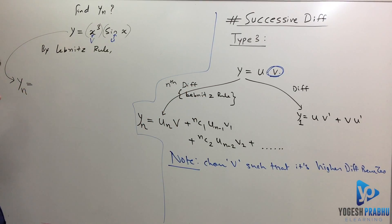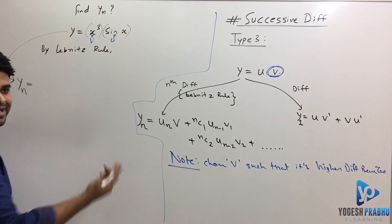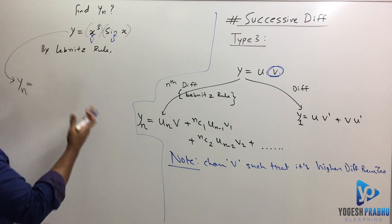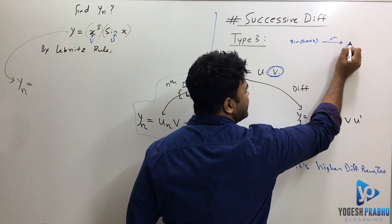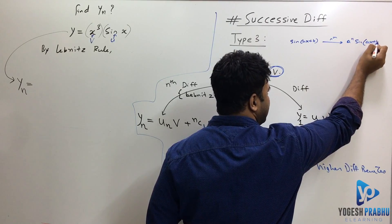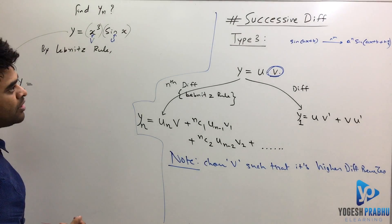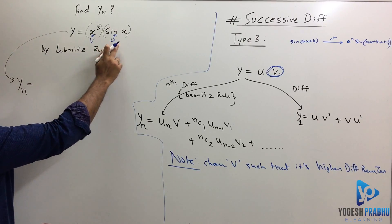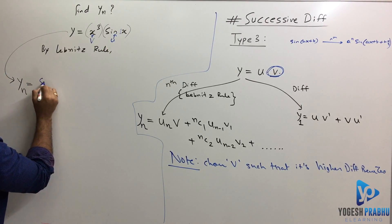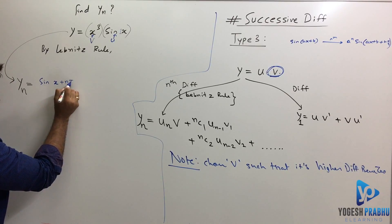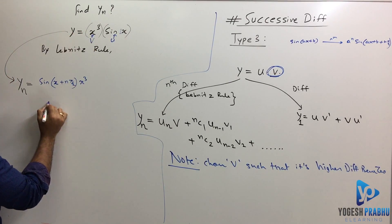Let me solve this question. Using Leibnitz rule to find y_n: u = sin(x), so u_n is the nth differentiation of sin(x). Using the formula for the nth derivative of sin(ax + b), which is aⁿ·sin(ax + b + nπ/2), and here a = 1, so u_n = sin(x + nπ/2). The first term is u_n·v = sin(x + nπ/2)·x³.